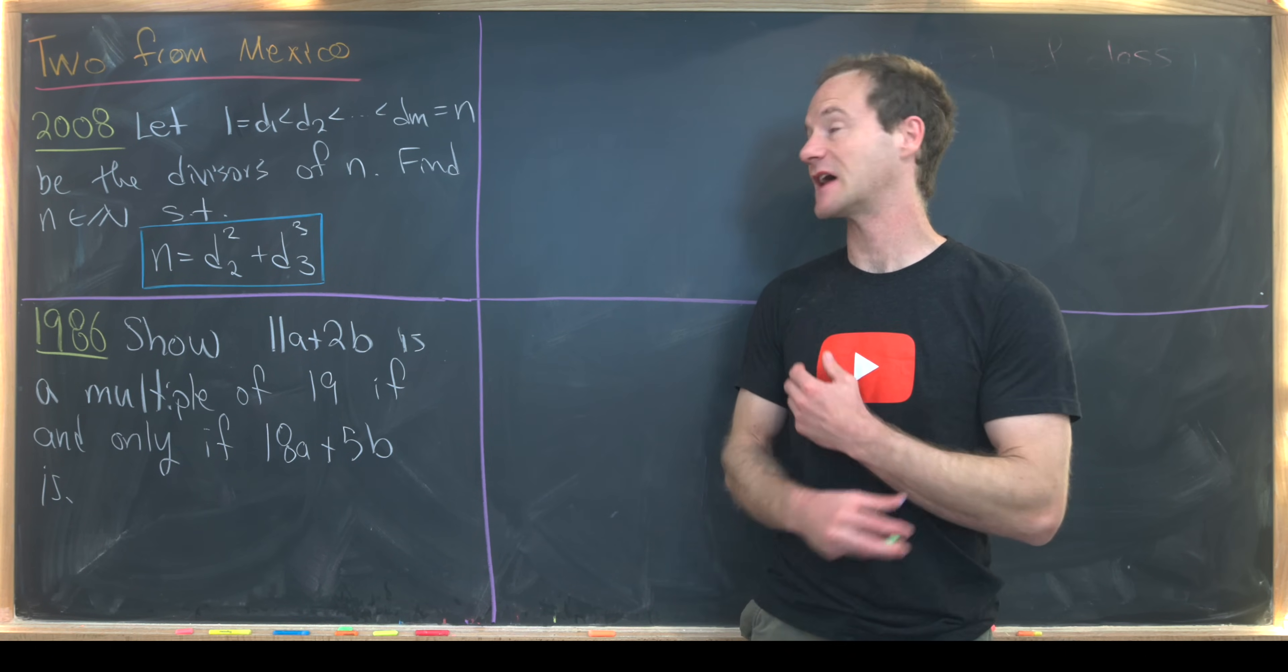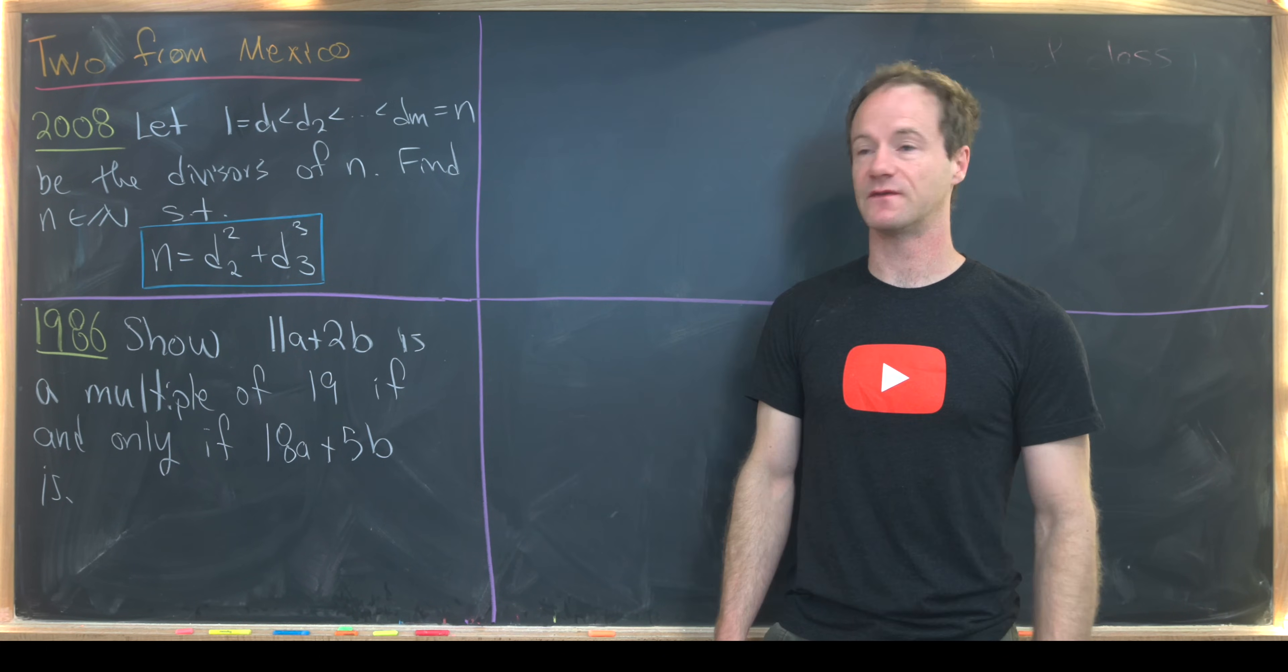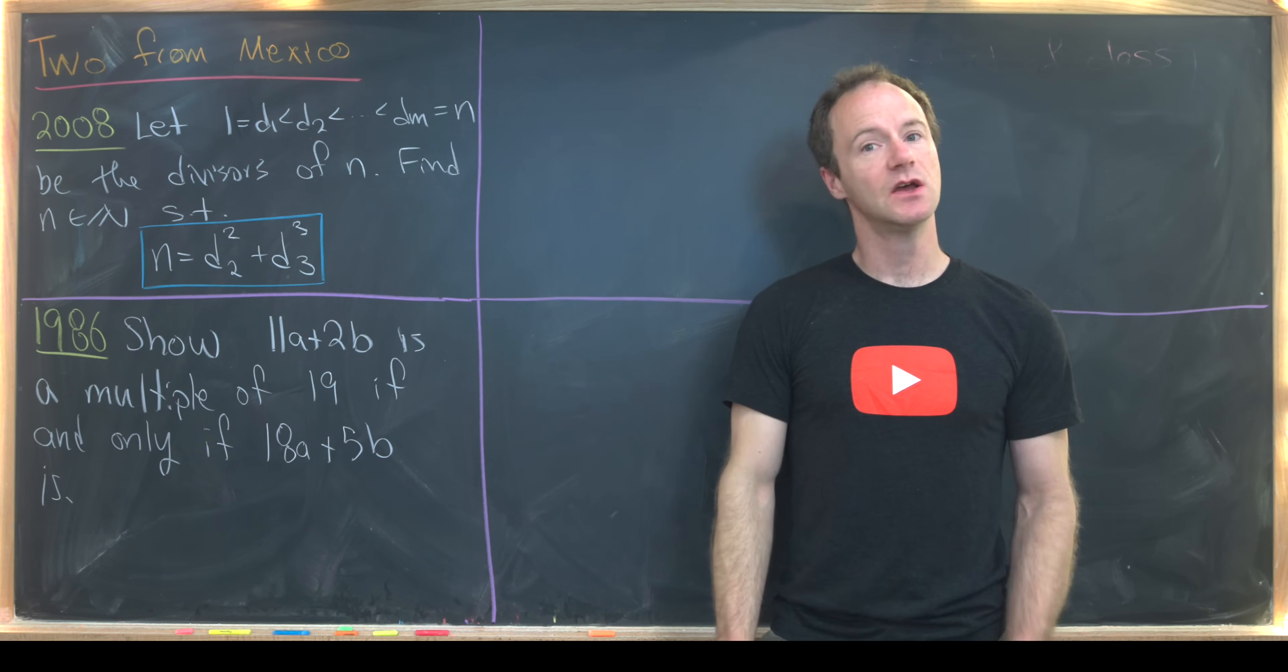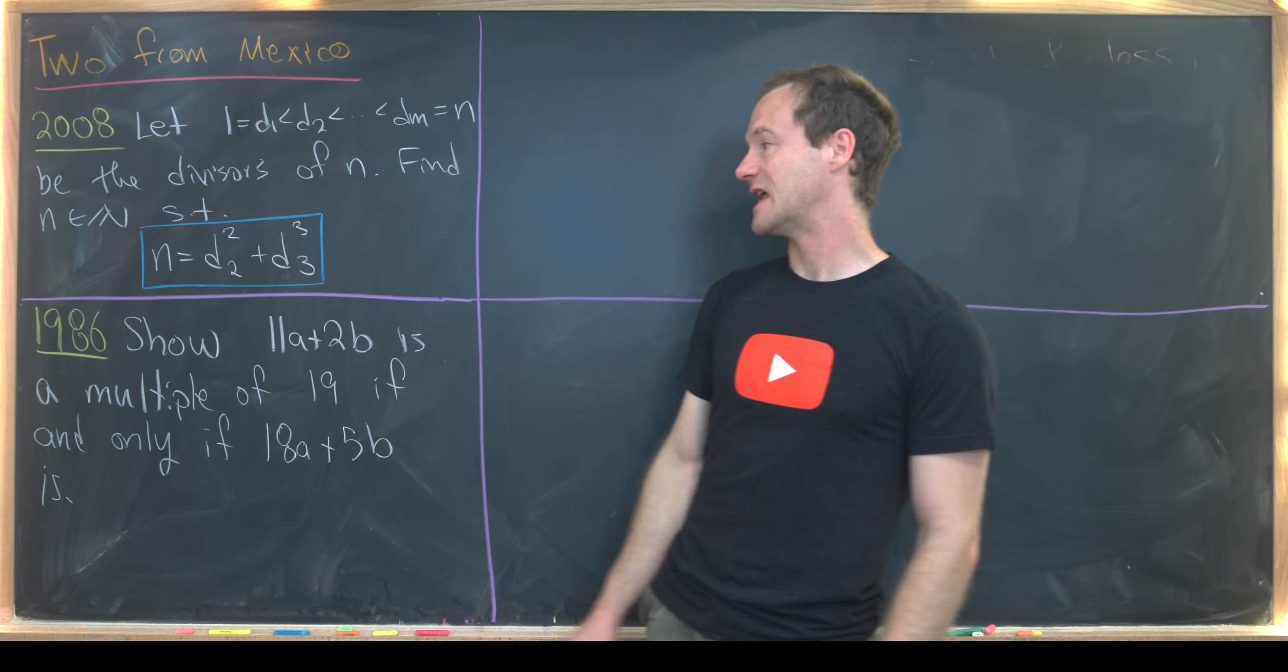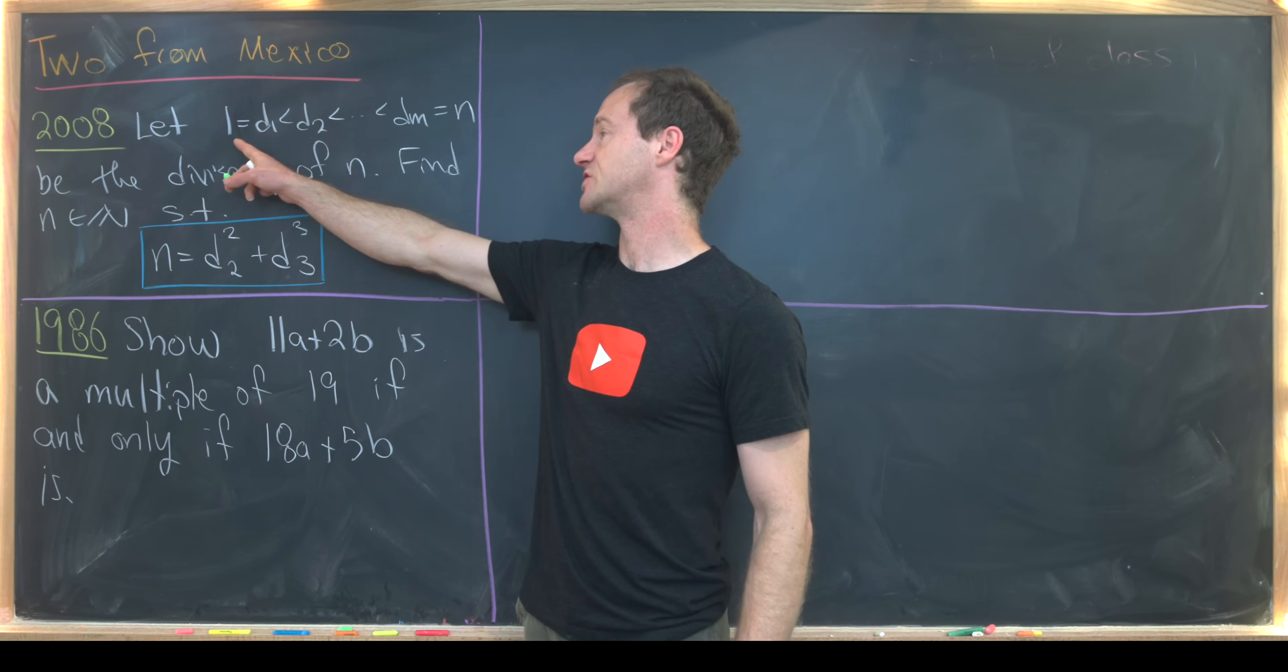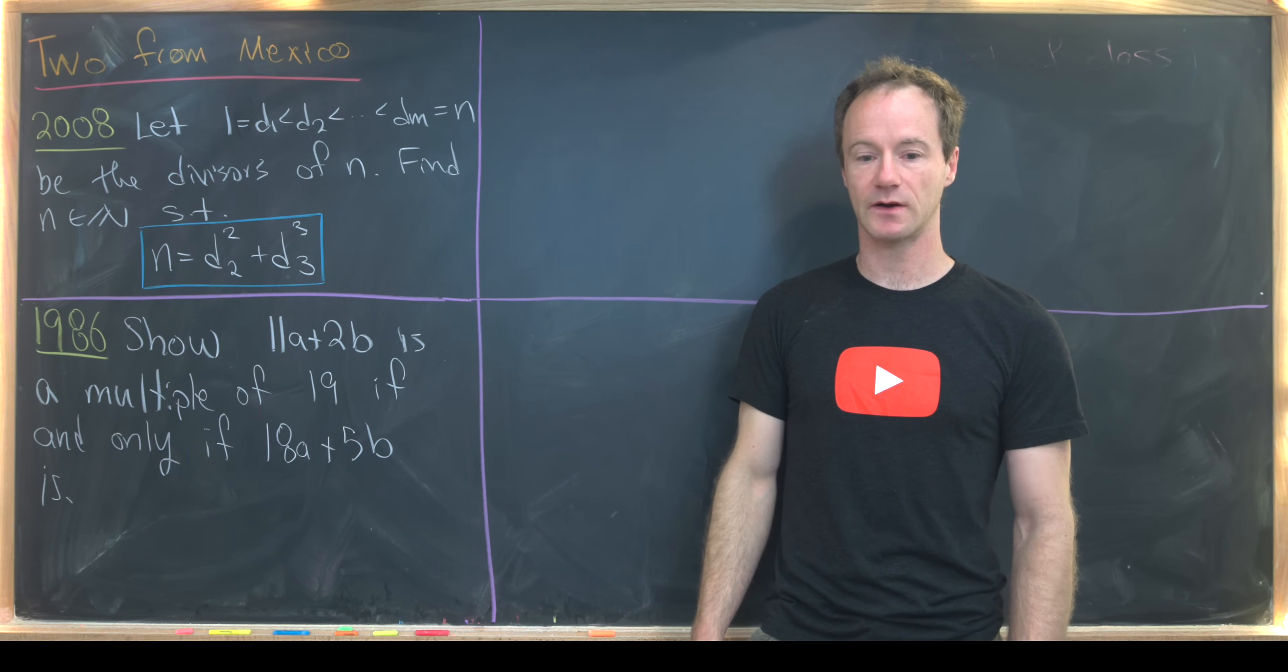We'll consider a natural number N and its list of divisors in order. D1 is 1, obviously 1 divides everything, and then D2 is the next smallest divisor all the way up to Dm, which is equal to N. Notice N is always a divisor of itself. Now we want to find N such that N equals D2 squared plus D3 squared. So that's the first divisor which is not equal to 1 squared, plus the second divisor that is not equal to 1 squared.